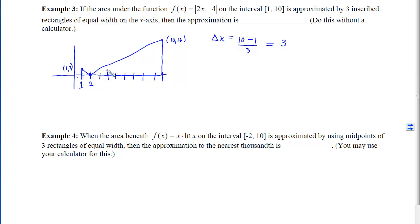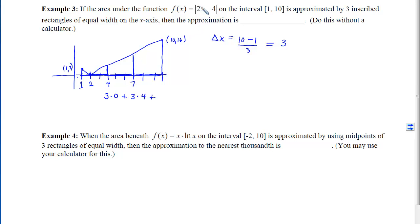We want three inscribed rectangles — inscribed means using the smallest (lowest y-value) height. In the first panel, the lowest y-coordinate occurs at x equals 2, giving height 0. The first rectangle's area is 3 times 0. The second rectangle has width 3 and uses x equals 4: the absolute value of (8 minus 4) equals 4. The third uses x equals 7: (14 minus 4) equals 10. Summing: 0 plus 12 plus 30 equals 42.